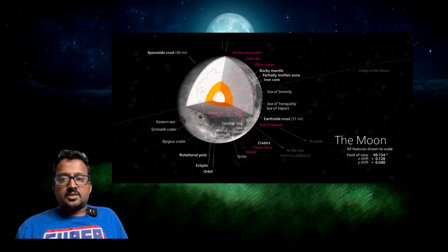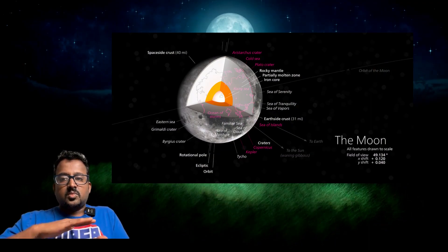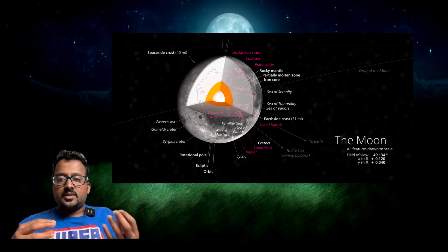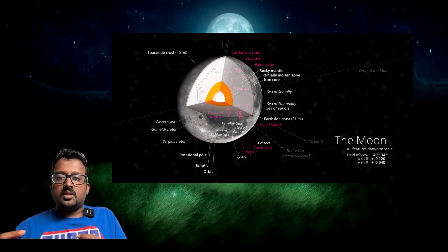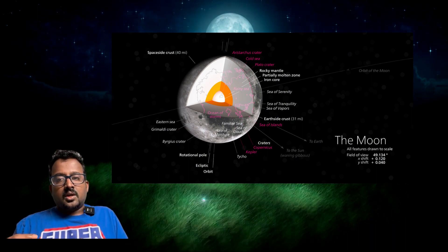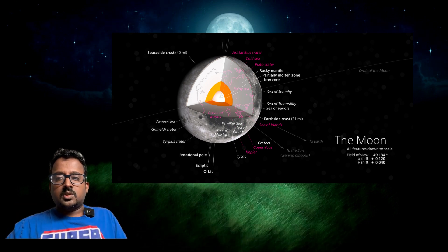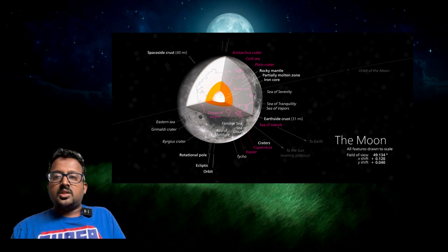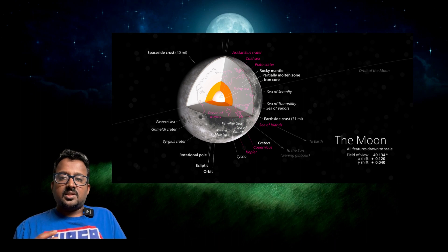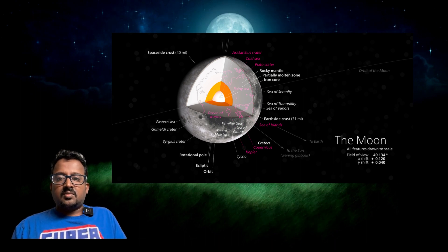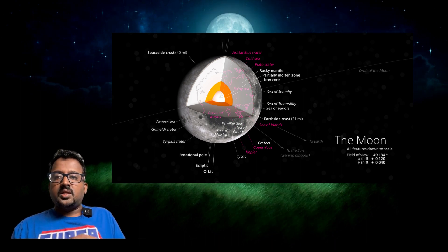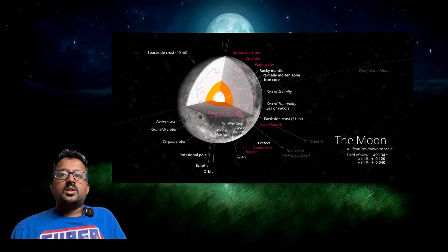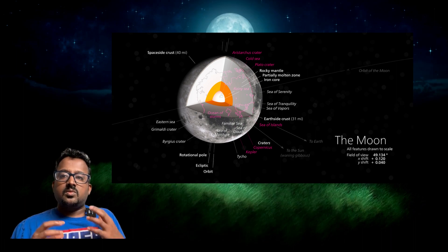The crust is nothing but the topmost surface of the moon — it contains rocks and minerals. The second one is the mantle, just below the crust. It also contains rocks and minerals, but sometimes contains lava-kind of materials in between. That is what this instrument is going to analyze.